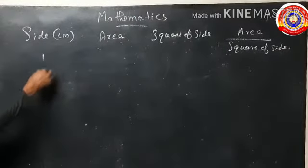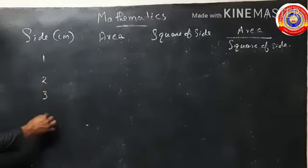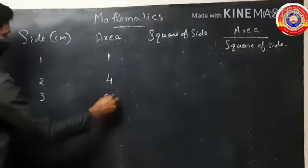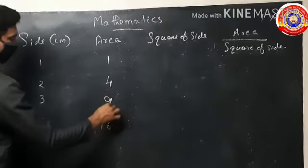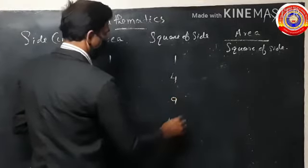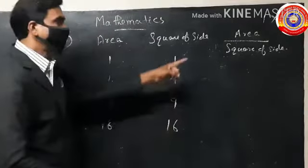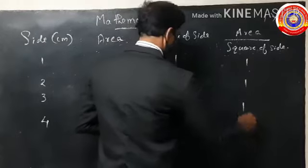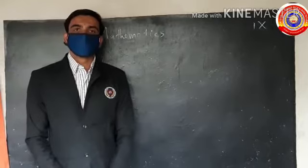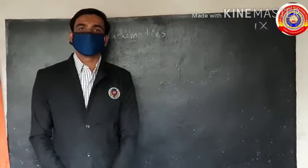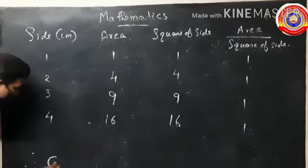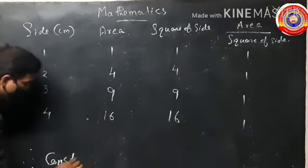Let side be 1, 2, 3, and 4 centimeters. Area is then 1, 4, 9, 16. Therefore square of the side is the same: 1, 4, 9, 16. Hence area by square of side equals 1 in all cases. For squares, area is proportional to the square of the length of the side, and the constant of proportionality is equal to 1.